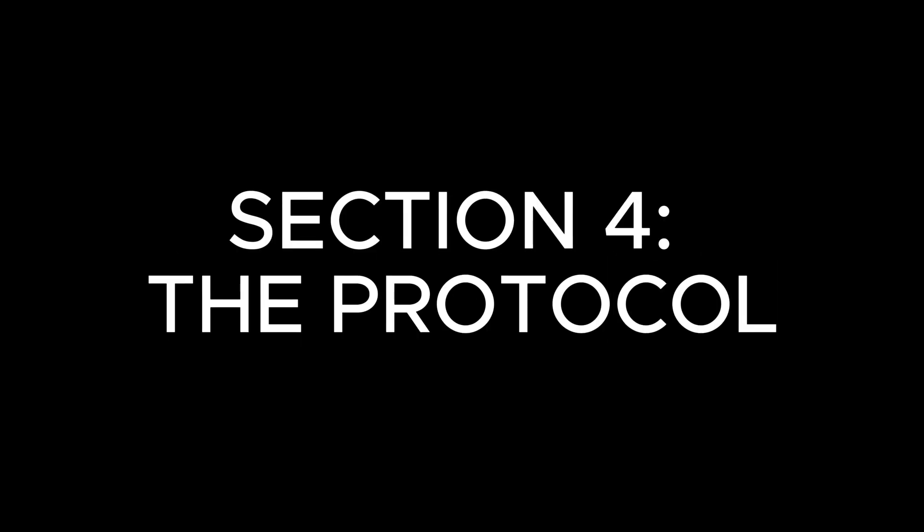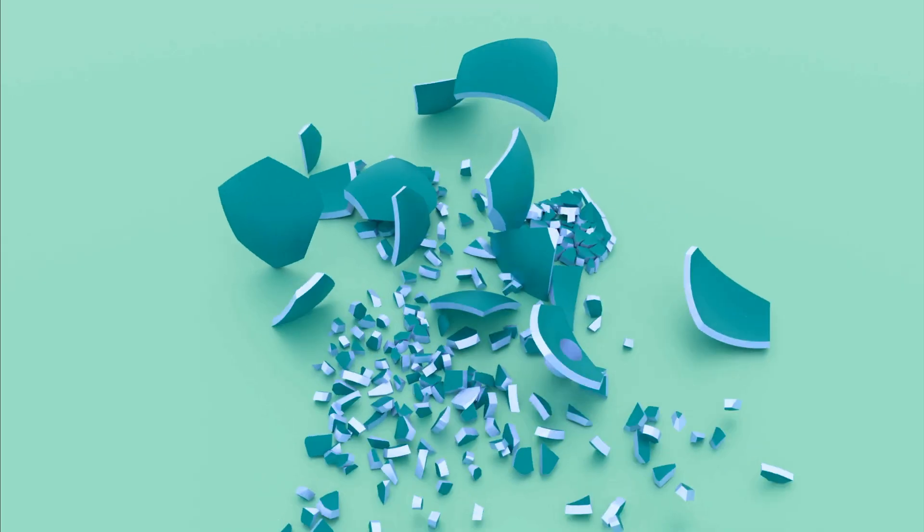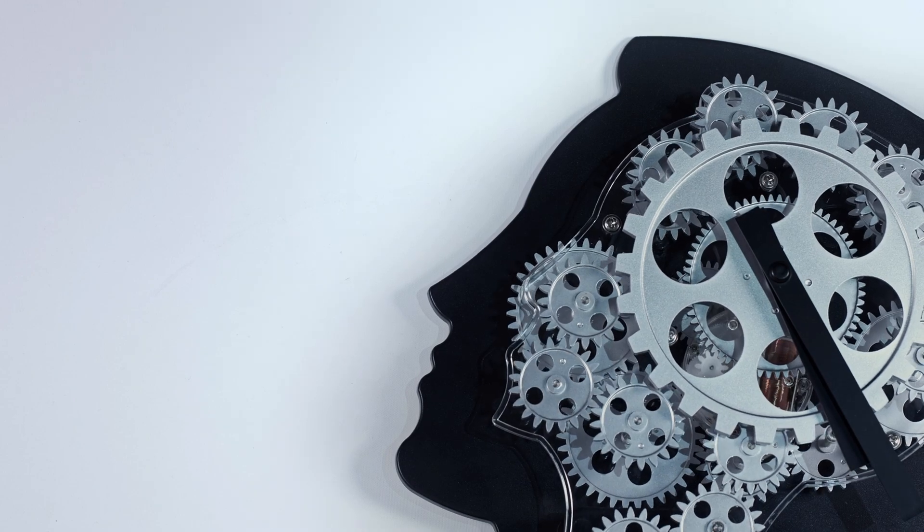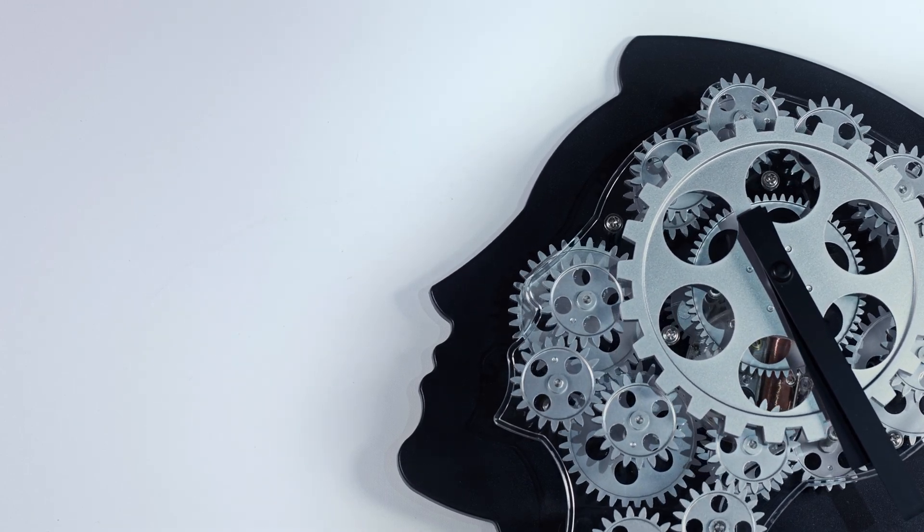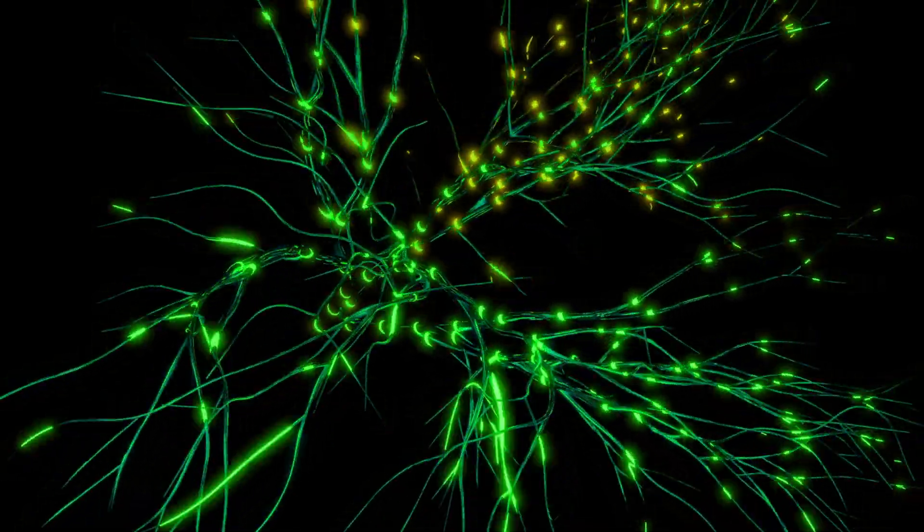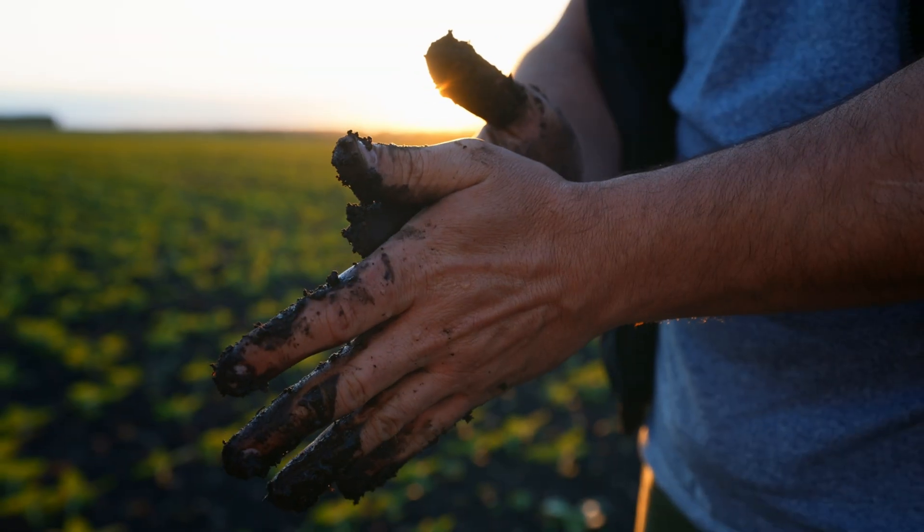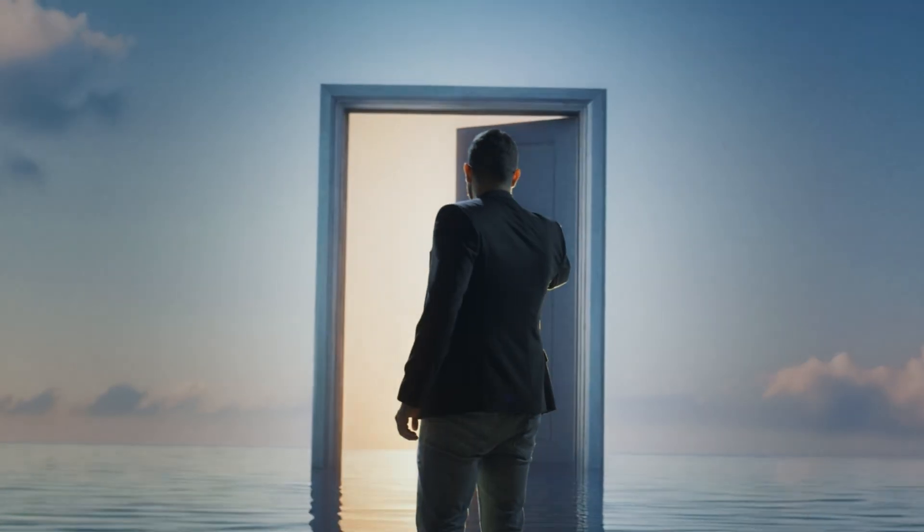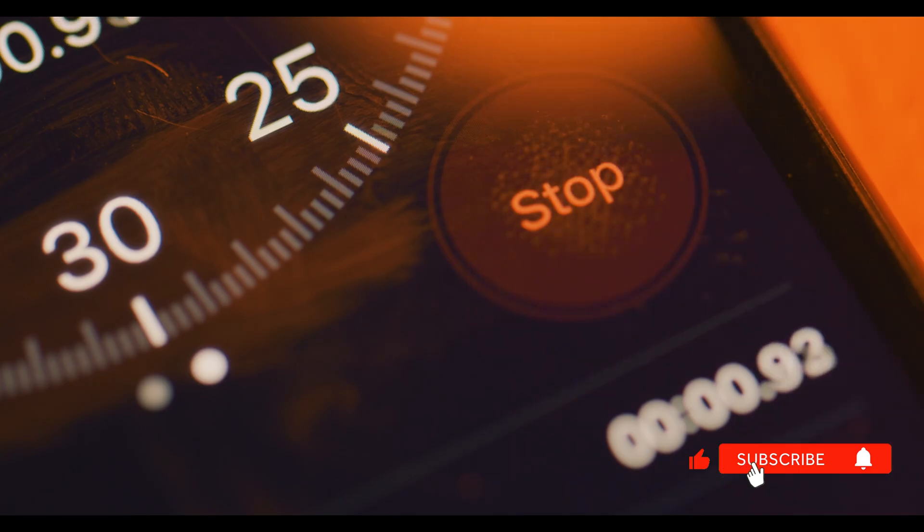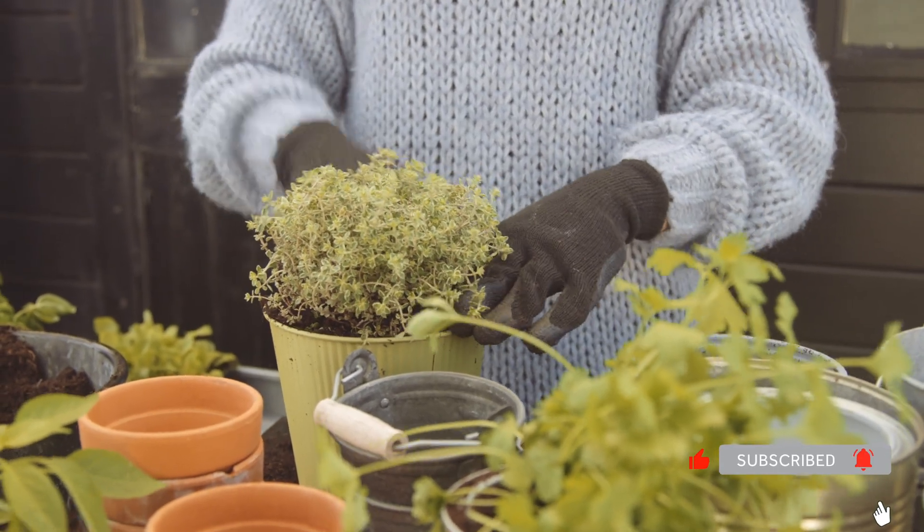The Protocol. First, address the perfectionist trap. If you've killed plants before, that's neurolearning data, not failure. Your brain builds stronger pathways through trial and error. Start messy. The 20-minute protocol. Start with 20 minutes, three times weekly. Begin with container herbs.